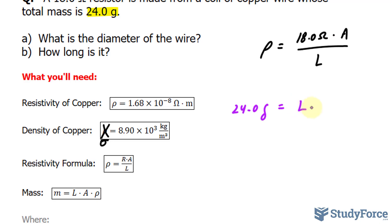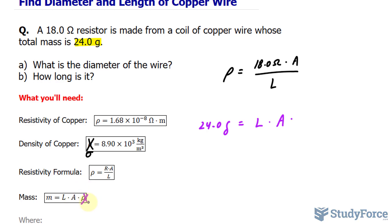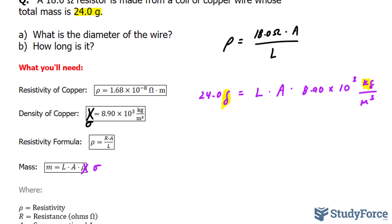So I don't know what the length is. Not sure about the area either. But I do know that the density which by the way we've called sigma is 8.9 times 10 to the power of 3 kilograms per meters cubed. You should notice right away that this is in grams and this is in kilograms and the units need to match.